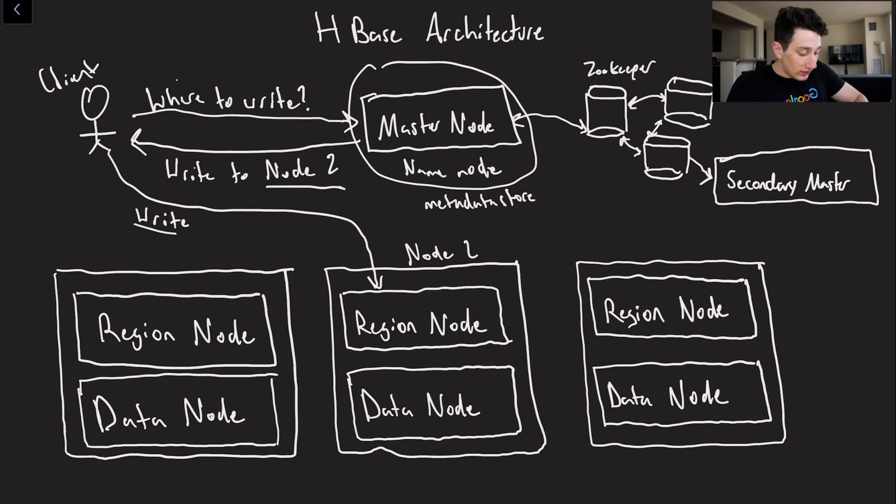Now you may see that on each of these nodes, imagine that each of these big boxes is one single computer in our Hadoop cluster. We have two boxes within that: a region node and a data node.